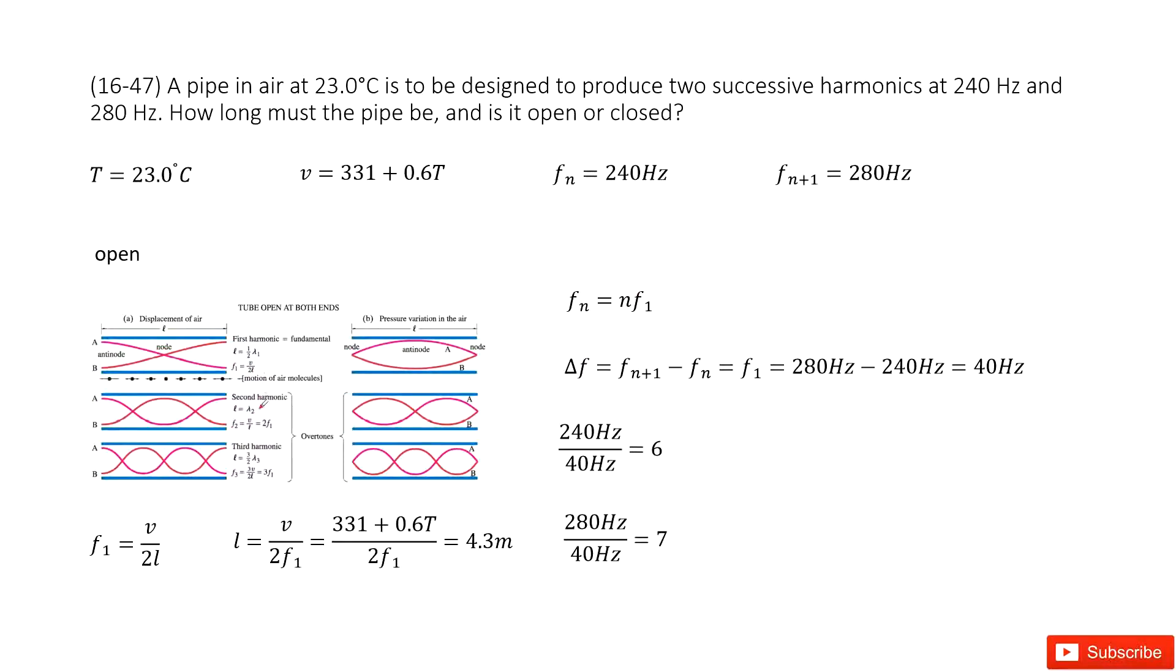You can see the difference for two successive frequencies: f2 equals 2 times f1, f3 equals 3 times f1. So the difference between them is just f1. Therefore, delta f equals f1.